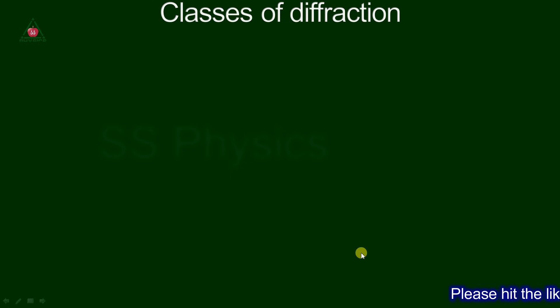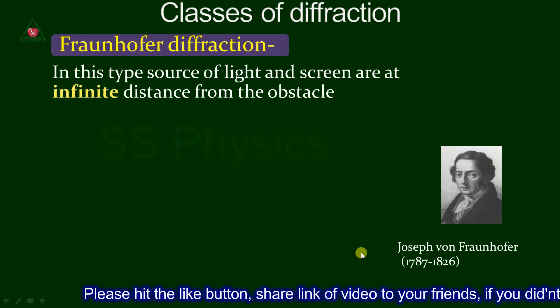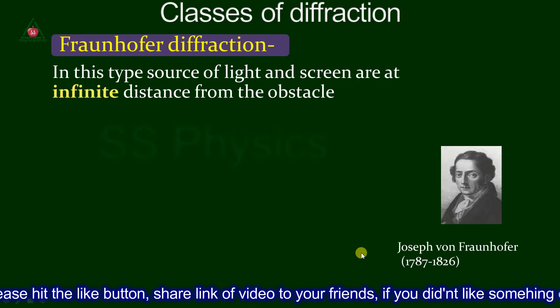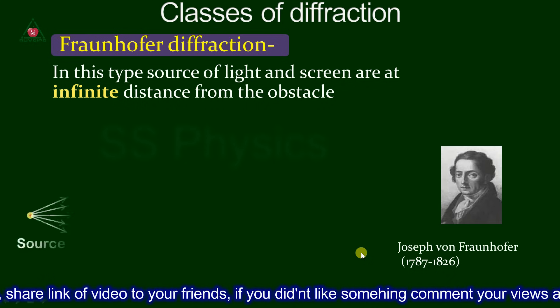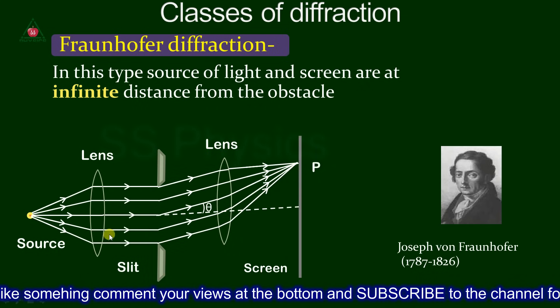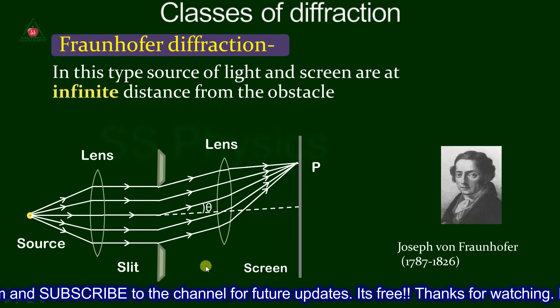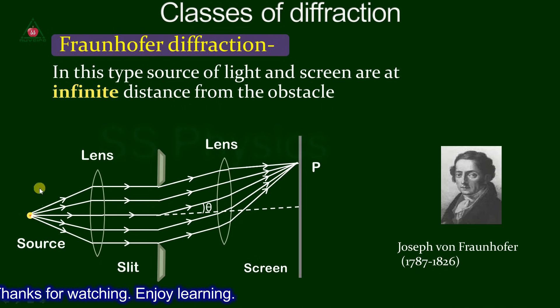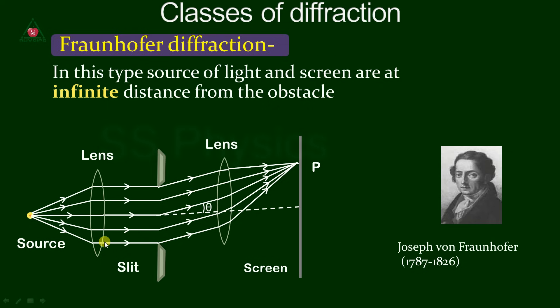There are two types of diffraction. First, Fraunhofer diffraction. In Fraunhofer diffraction, the source of light and the screen are at infinite distance from the obstacle. As shown in this figure, the source is a point source, therefore it will give a spherical wavefront. The width of the slit is of the order of 0.1 mm or 0.02 mm — it is very small practically. If you want to perform Fraunhofer diffraction in the laboratory, you will need two biconvex lenses.